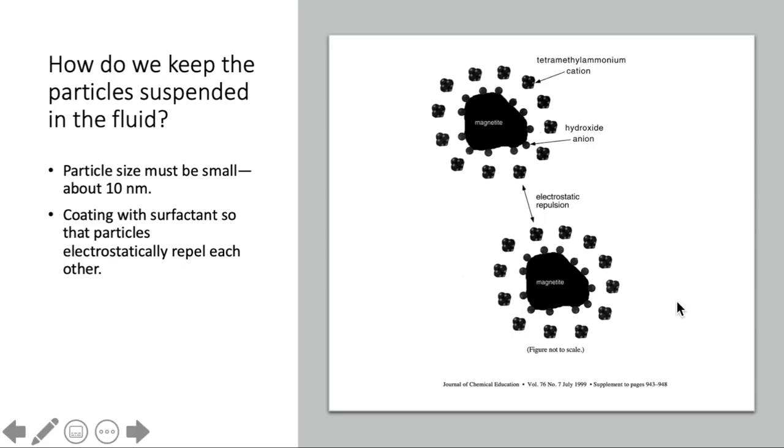And the second thing is that we coat the surface with a surfactant. And this is our tetramethyl ammonium hydroxide. In this diagram, you can see the hydroxide ions sticking to the surface of the magnetite, and then the tetramethyl ammonium ions surrounding the outside. This gives each particle a coating of positive charge. So that means there's electrostatic repulsion between the particles.